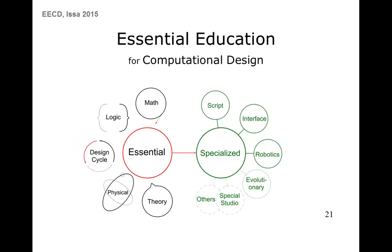The urgent question was: how can we address these challenges without compromising the quality of education, and how can we even define the essential education for computational design? This question occupied me and prompted me to go back into education for the past two and a half years to experiment with ideas and develop models that might work. I started by identifying five core components that I thought were key for a comprehensive understanding of computational methods in architecture — with many other areas of specialization that the program can be expanded to.